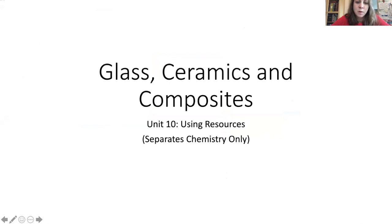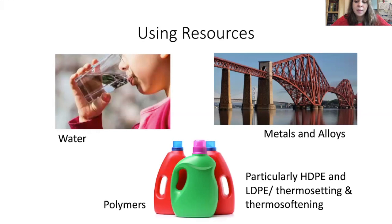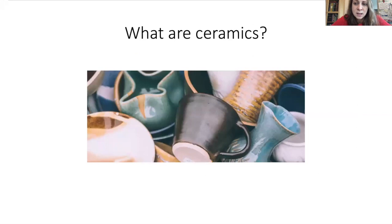Hello, today we are going to carry on with our using resources topic and we're going to be thinking about some new materials. We're going to think about glass and ceramics and composites. This belongs in unit 10, the using resources topic, and it's a separate chemistry only topic. So far we've thought about water, about metals and alloys, and about polymers, particularly HDPE and LDPE and the thermosetting and thermosoftening polymers. Today we're going to meet three new materials: ceramics, glass and composites.